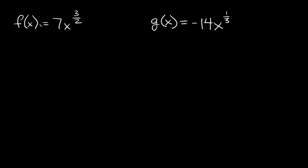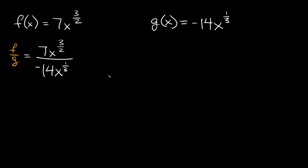Let's try one more division problem. We have f of x equal to 7x raised to 3 halves, and g of x equal to negative 14x raised to the 1 third. We're going to do f divided by g, so we have 7x to the 3 halves over negative 14x to the 1 third. To clean it up, we can pull out the coefficients: 7 over negative 14, multiplied by x to the 3 halves over x to the 1 third.